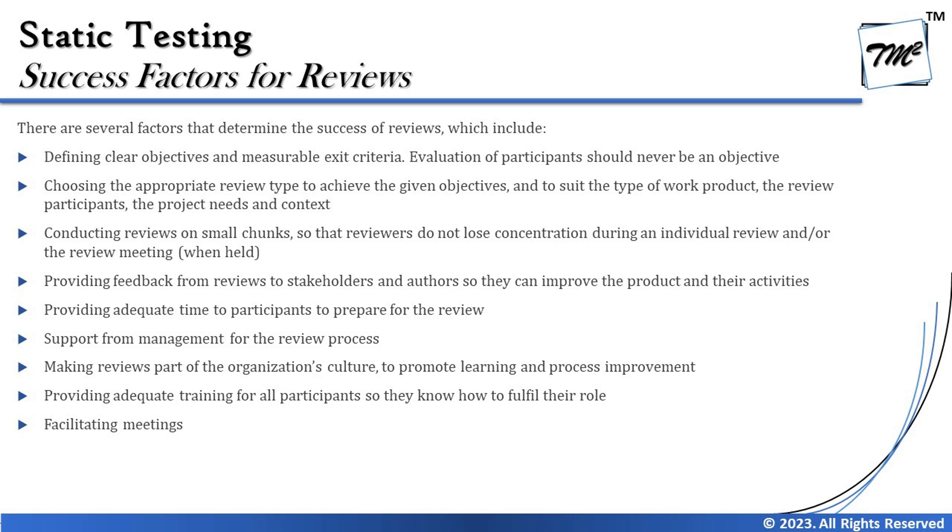Another factor is choosing an appropriate review type to achieve the given objective and to suit the type of work product, the review participants, the project needs, and context. We have discussed that different types of review processes exist, and not one type is applicable to all documentation. In simple words, you cannot use inspection where an informal review would be enough, nor should you use an informal review where inspection is required. Review types must be appropriately selected based on the participants, the type of work product, and so on.